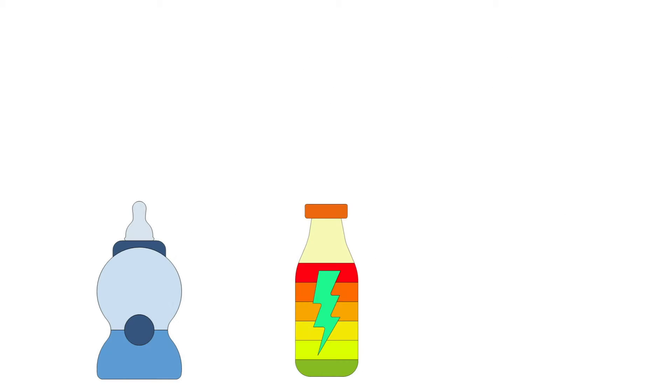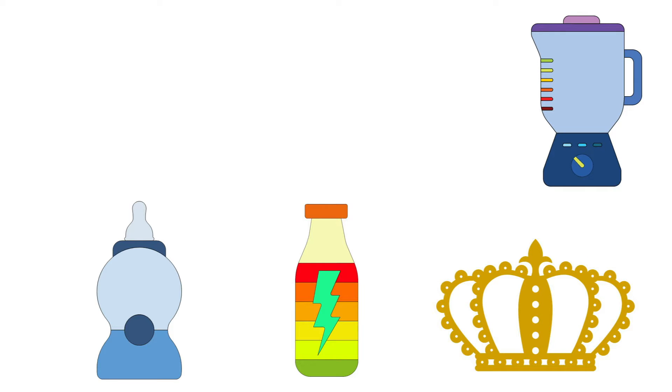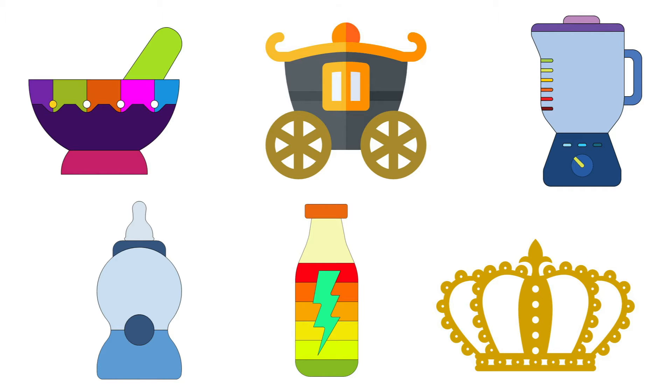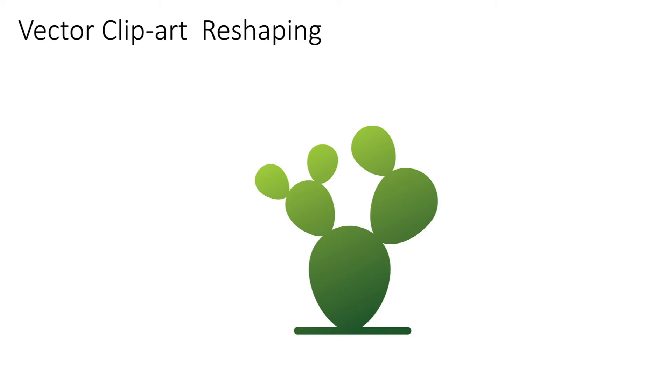Vector clipart images consist of differently-colored regions bounded by a network of vector curves. When editing clipart images depicting synthetic content, artists often need to reshape these inputs by changing the locations, proportions, or scales of different image elements.